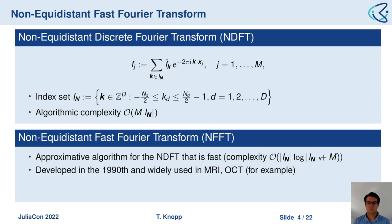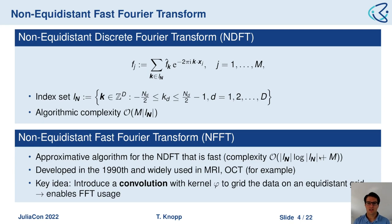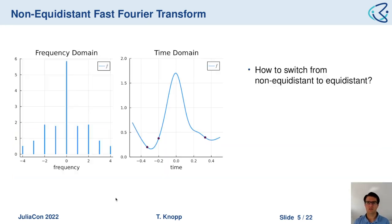The NFFT was developed in the 90s and is used in MRI and OCT, among other applications. The key idea is to introduce a convolution with a kernel phi, which allows us to grid the data from non-equidistant to equidistant or vice versa, and this in the end enables FFT usage.